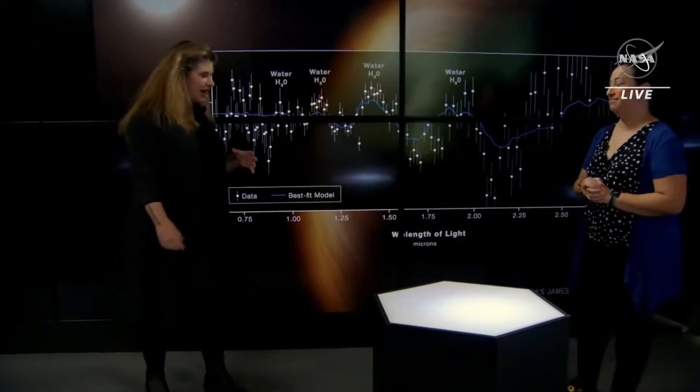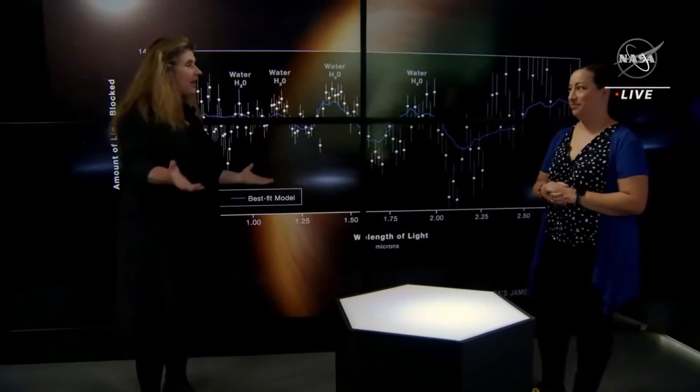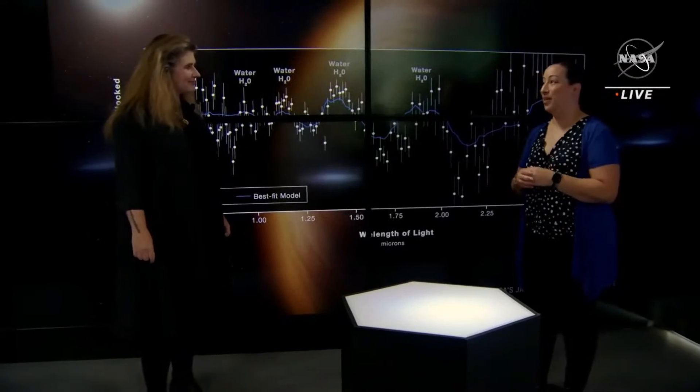And I guess one thing we should mention is not only are we going to be looking at planets that are more like the Earth in the future, but we'll also be looking at planets in our own solar system. Absolutely. Yes, we're going to have exciting data from planets in our solar system, from Mars outward, as well as asteroids and comets. So stay tuned for a lot more to come.